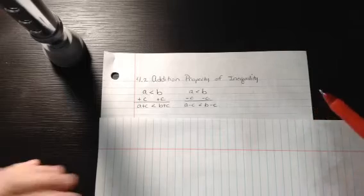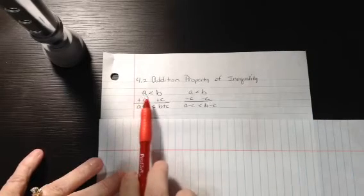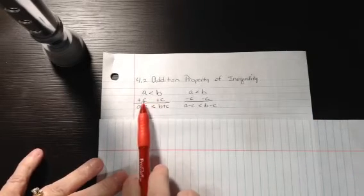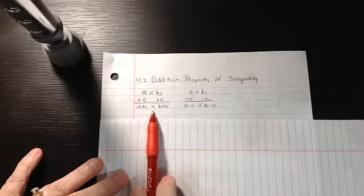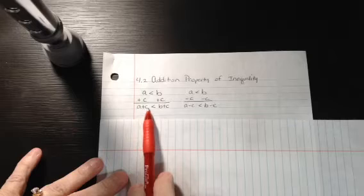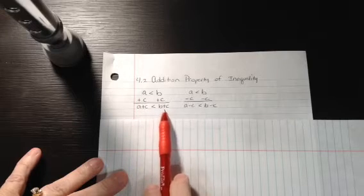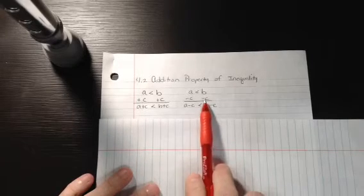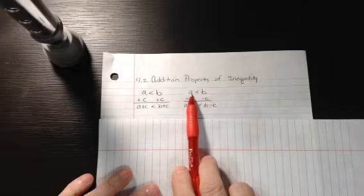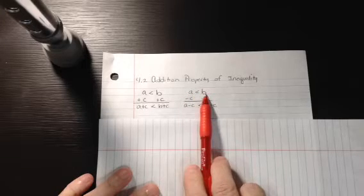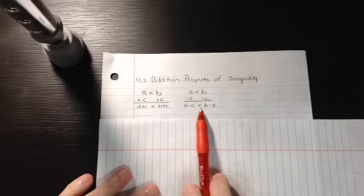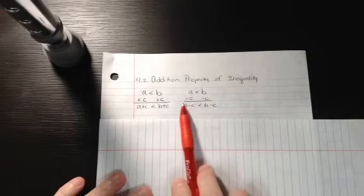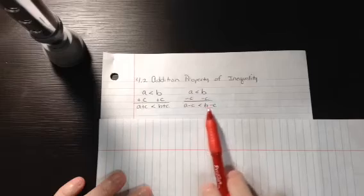So for inequalities, when you have one side that's less than the other side, and you add the same thing to both sides, then you still have a true statement. This side is still less than the other side. And the same thing is true for subtraction. If you have one side that's less than the other side, and you subtract the same thing from both sides, then you still have a true statement.